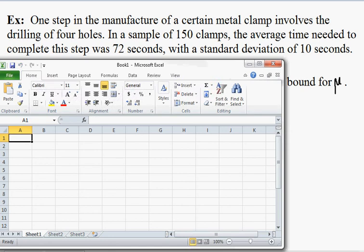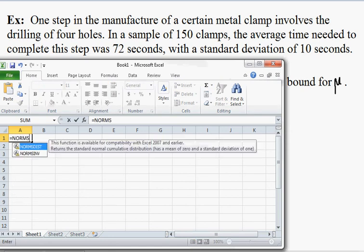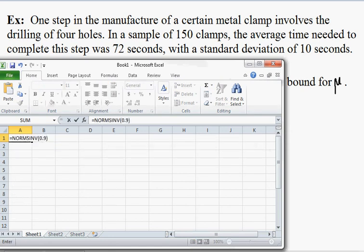Let's use Excel to get that number real quick. So the norm s inv of 0.9, so that 90% of the area lies to the left, is 1.2815.